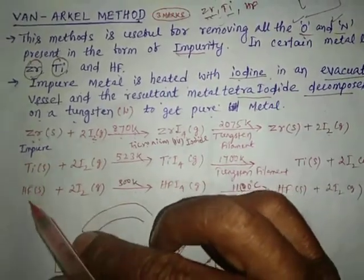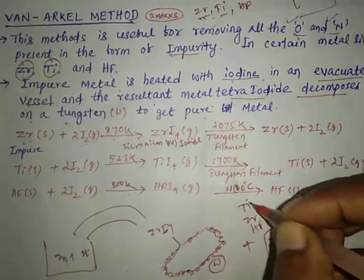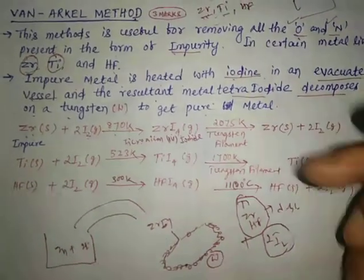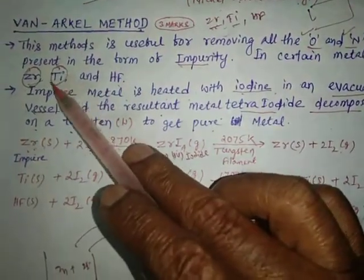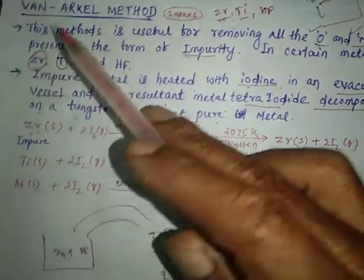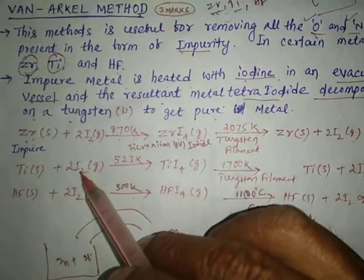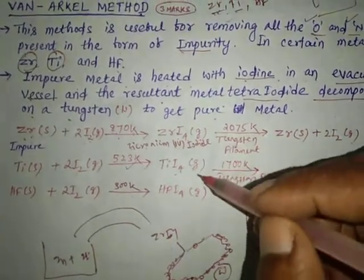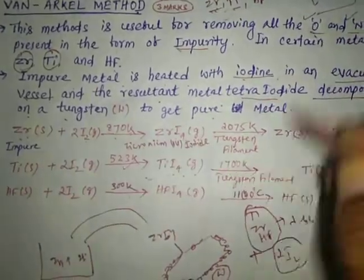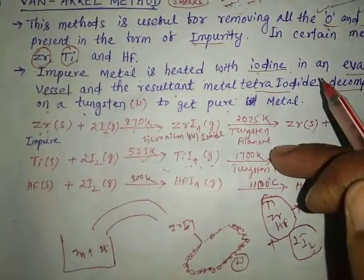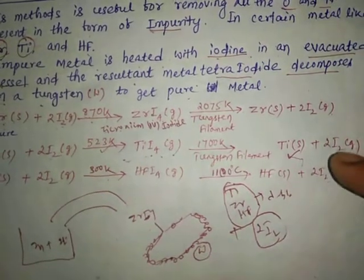Because zirconium, titanium, and hafnium are D-block elements, the process and method is the same for all. For titanium: Ti + 2I₂ at 523 Kelvin gives TiI₄ in gaseous form — titanium tetraiodide. This is then heated at 1700 Kelvin to yield titanium metal (solid) and 2I₂ gas.